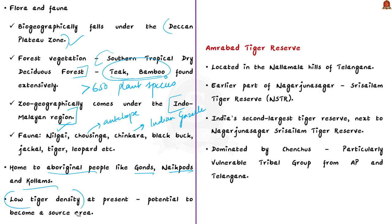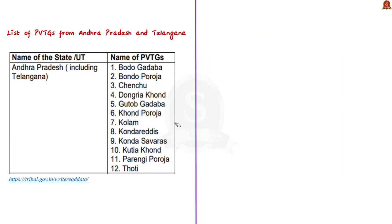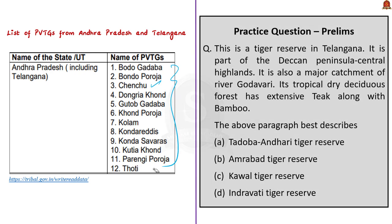Along with Kaval Tiger Reserve, another important tiger reserve in Telangana is the Amrabad Tiger Reserve, located in the Nallamala hills. This was earlier part of the Nagarjuna Sagar Shri Salem Tiger Reserve, but after the bifurcation of Andhra Pradesh, the northern part was vested with Telangana and renamed Amrabad Tiger Reserve. Despite the division, it remains India's second largest tiger reserve, and together with Nagarjuna Sagar Shri Salem, they form India's largest protected dry forest. Amrabad Reserve is also dominated by the Chenchu tribe, a particularly vulnerable tribal group from Andhra Pradesh and Telangana.